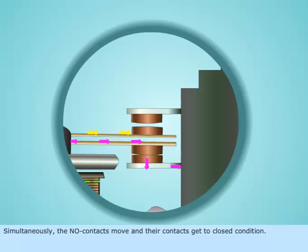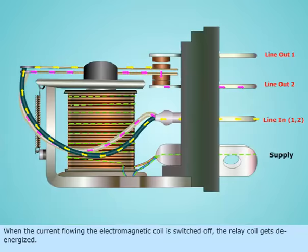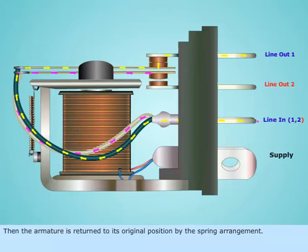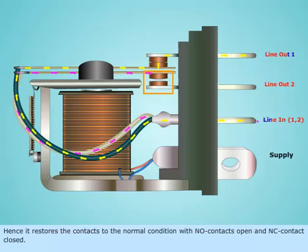When the current flowing through the electromagnetic coil is switched off, the relay coil gets de-energized. Then the armature is returned to its original position by the spring arrangement. Hence, it restores the contacts to the normal condition with NO contacts open and NC contacts closed.